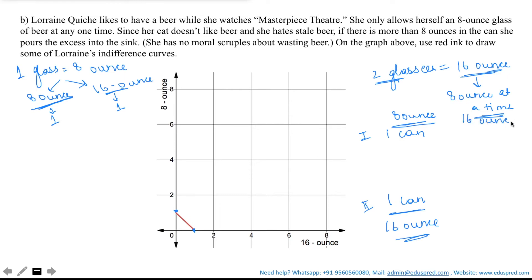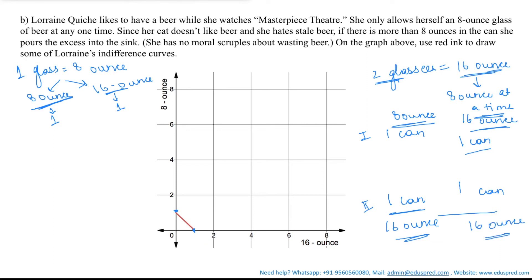What if she has only 16-ounce cans? In the first half she pours one can: half into her glass and half into the sink. She cannot store the remaining beer because her cat does not like stale beer, so she must finish the entire can in one go, drinking 8 ounces and discarding the rest. In the second half she again pours one can — making a total of 2 cans of 16-ounce used, but Lorraine has only consumed 16 ounces, not 32.